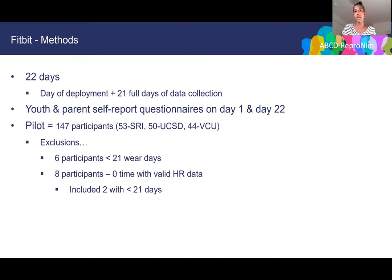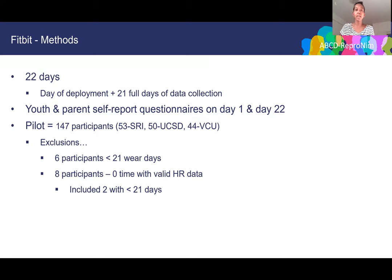The types of data collected include steps per minute, distance traveled per minute, physical activity intensity (intense, moderate, light), energy expenditure including resting and active calories, sleep measures, heart rate, and flights of stairs per day. In the pilot — about 150 participants across three sites (SRI, UCSD, and VCU) — six participants were excluded for fewer than 21 wear days, and eight participants were excluded for having no valid heart rate data, with two of those overlapping.